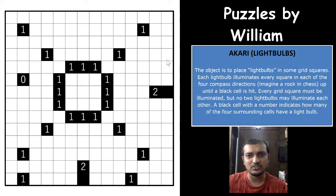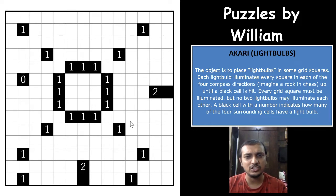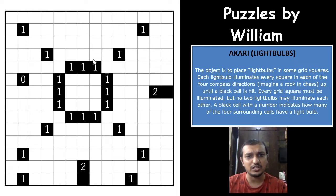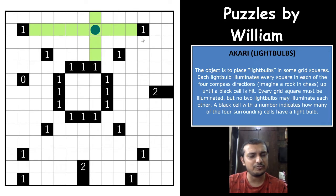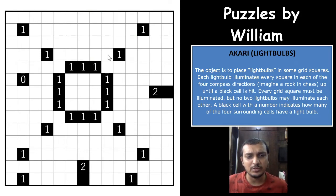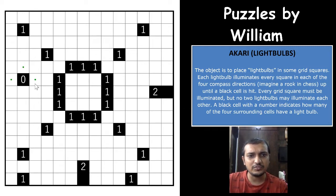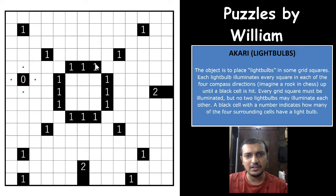As the name says, Light Bulbs — you have to place light bulbs in some grid squares. Each bulb will light up all the white cells in the four orthogonal directions, until it hits a black cell or the edge of the grid. If you place a light bulb here, it will illuminate all the cells the light bulb can see in all four orthogonal directions.